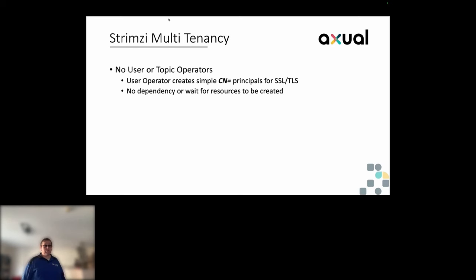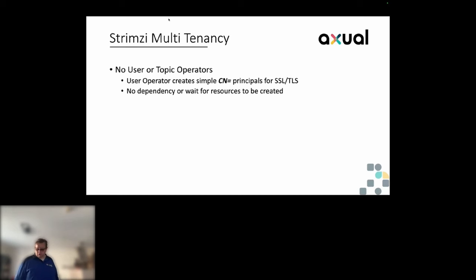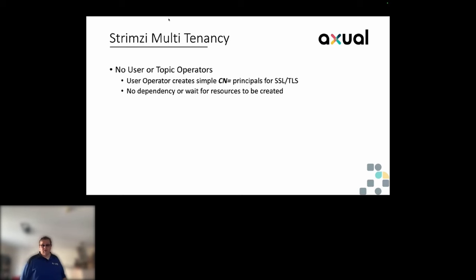Because of our new SSL requirements, we also needed to update the Kafka images from Strimzi — which they allow. We added our own principal builder and configured Strimzi to use that principal builder, and now it will add the certificate authority to the principal name. Strimzi's flexibility and extendability allowed us to do this relatively simply.